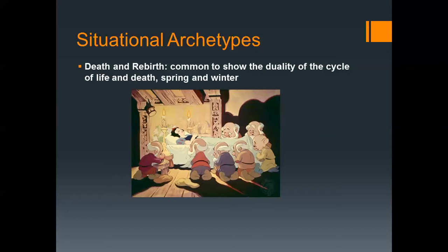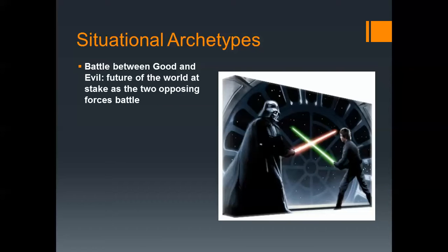Death and rebirth is the most common of all situational archetypes. It shows the duality of the cycle of life and death, spring and winter. Morning and springtime represent birth, youth, and rebirth, while evening and winter suggest old age or death. There's a picture of Snow White — we know she died and then came back to life. The battle between good and evil is obviously a battle between two primal forces. We like it when good triumphs over evil. This is a picture of Luke Skywalker and Darth Vader — good and evil — battling each other with lightsabers.